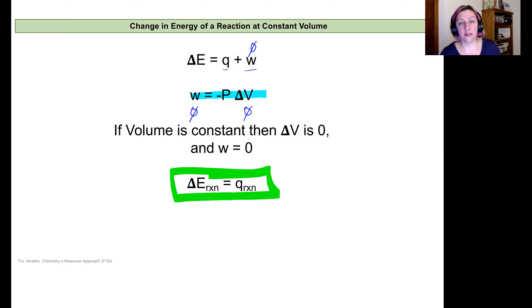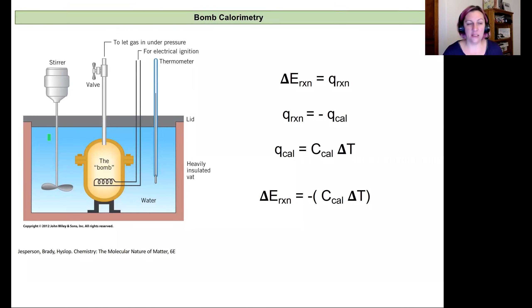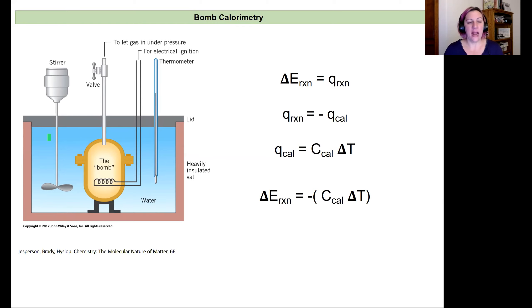We can simplify this by how we design our experiment, which is really cool. A bomb calorimeter has a heavily insulated container, and inside it you have the bomb, which is just a container that holds a constant volume no matter what. You can put a material inside it, with a wire to ignite it using an electrical spark, and a gas valve to let gas in under pressure.